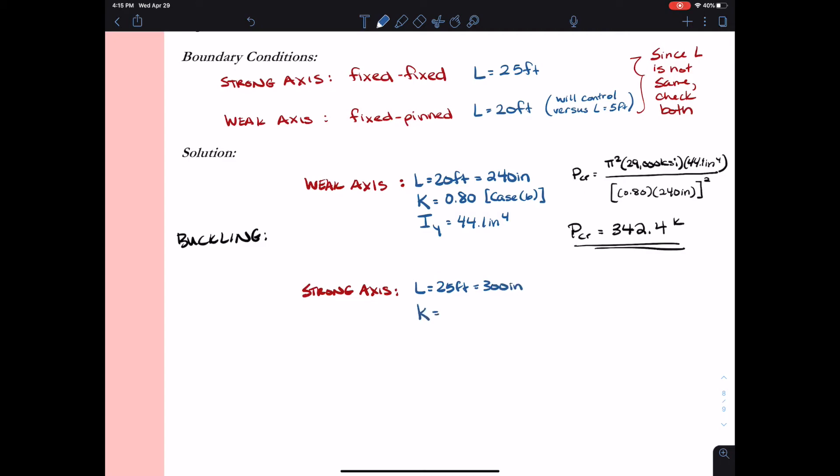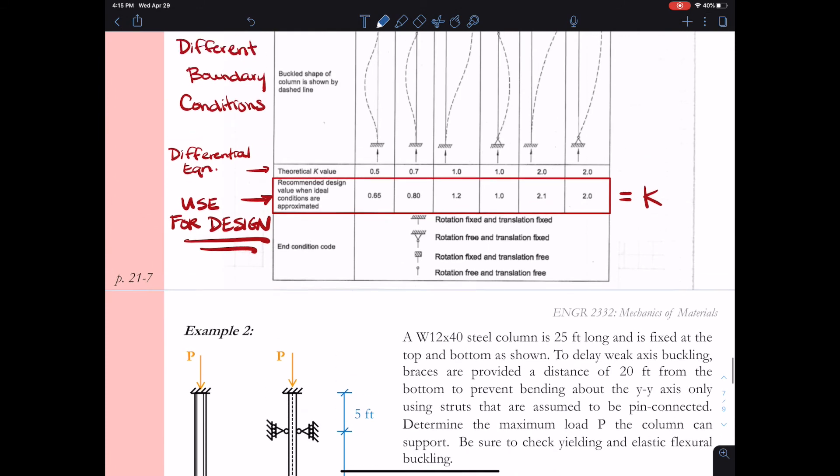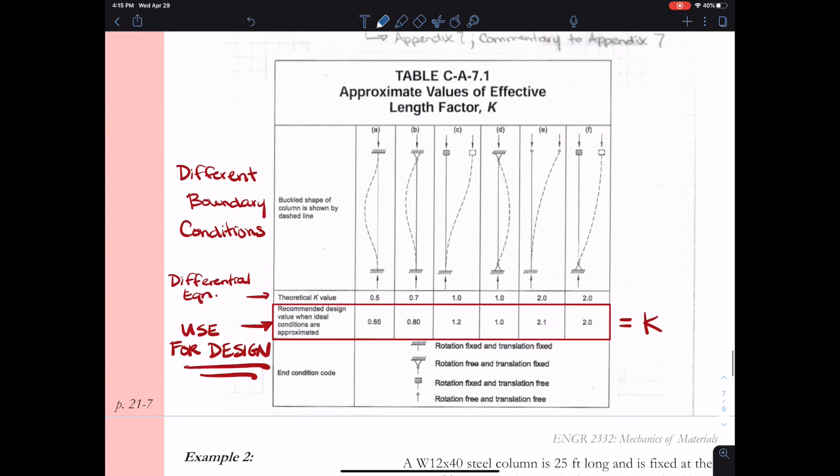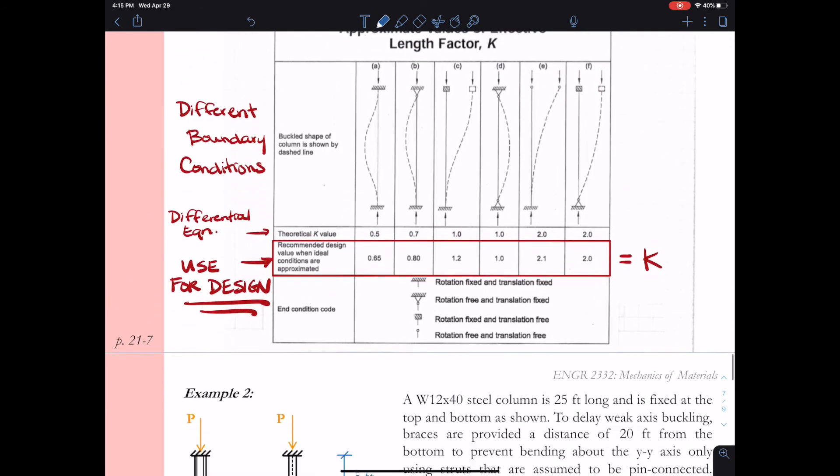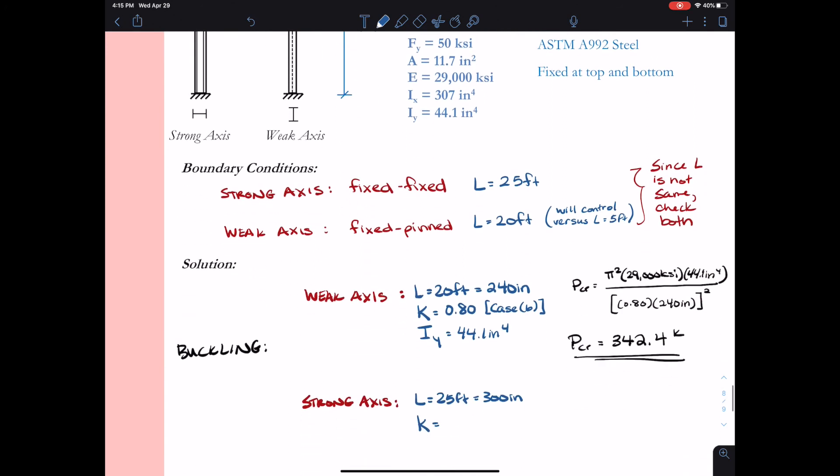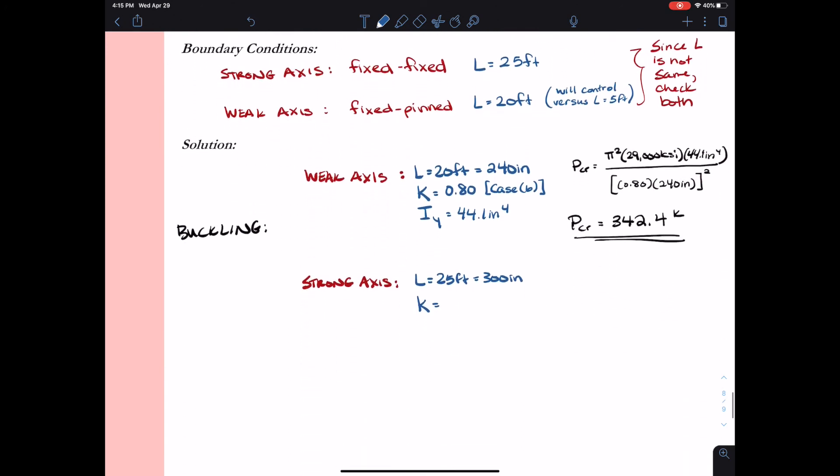Now my boundary conditions for strong axis buckling were fixed fixed. That pertains to case A from this table. So if we look at case A, the design value K equals 0.65. So this is what I'll use in my P critical equation. Finally, my moment of inertia about the strong axis is 307 inches to the fourth.